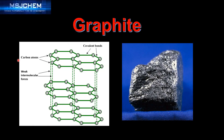Let's start with the structure of graphite. The carbon atoms are joined by strong covalent bonds. Each carbon atom is bonded to three other carbon atoms, giving a bond angle of 120 degrees. The layers of graphite are held together by weak intermolecular forces, which allows them to slide over one another, making graphite very soft.